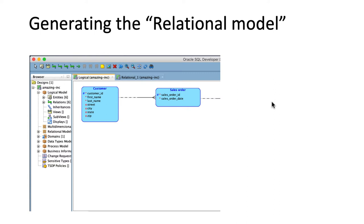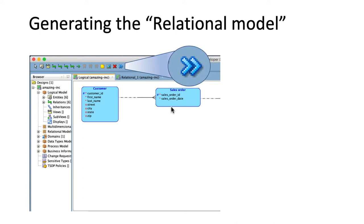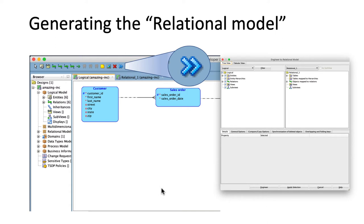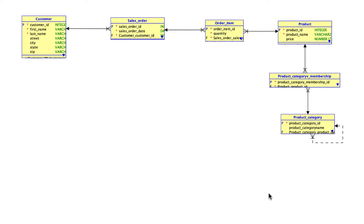The relational model is closer to the physical database. For example, in the relational model you will see the foreign keys mentioned explicitly rather than being implicit as in the logical model. To generate the relational model within Oracle Data Modeler, use the Engineer button — located up top among the icons, represented by two greater-than signs. That's the forward engineering button — take the logical model and move it forward to the relational model. Click the Engineer button in the pop-up window and it will generate the relational model.